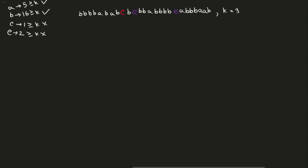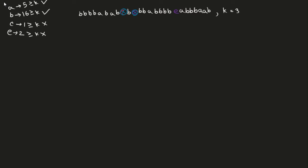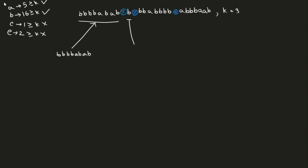We mark the C's and E's in the string and cross them out. Now we split on those characters and take the remaining parts: the first part is four B's and ABAB, the second part is just B, the third part is BBA and four B's, and the fourth part is A, three B's, AAB.